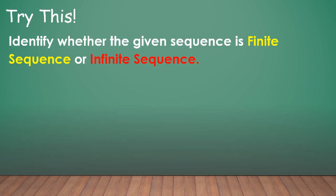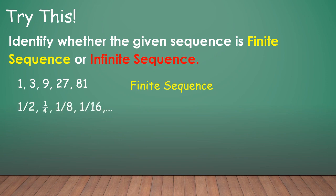Let's try this one. Identify whether the given sequence is finite sequence or infinite sequence. 1, 3, 9, 27, 81. So obviously this is an example of a finite sequence because there are only 5 terms on this sequence. Let's have the next one: 1, 1/2, 1/4, 1/8, 1/16, and so forth. So this is an example of infinite sequence because there is an ellipses on this sequence.